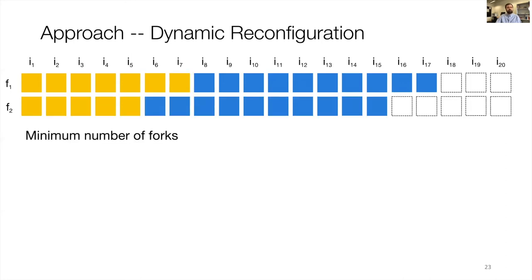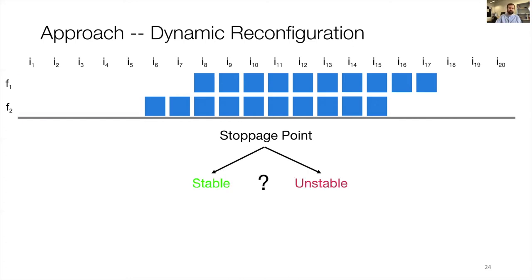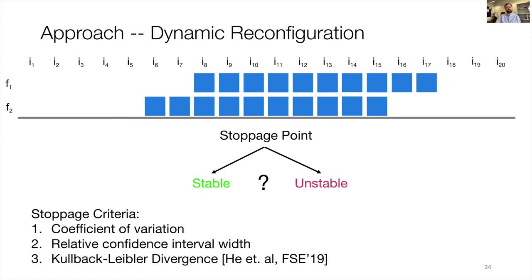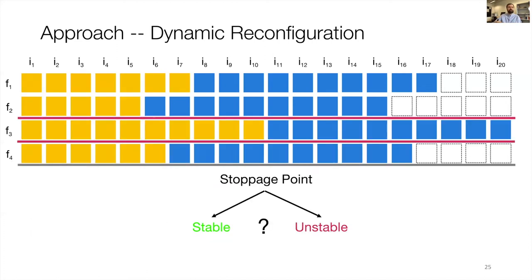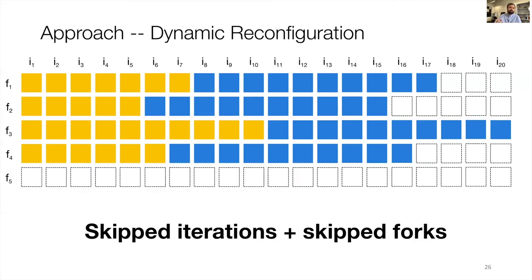We then repeat this dynamic procedure for a minimum number of forks to capture run-to-run variance. After this minimum number of forks, we arrive at a stoppage point where we look at the measurement iterations of all previously run forks to decide whether the overall measurement is stable or not, again based on our stoppage criteria. If still unstable, we run one fork after the other until we arrive at a stoppage point where our criteria says the overall measurement is stable — and this is the end of the execution. With dynamic reconfiguration, we can not only save iterations but also skip full forks.